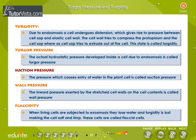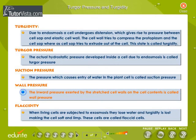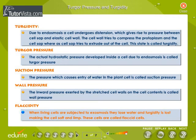Suction Pressure: The pressure which causes entry of water into the plant cell is called Suction Pressure. Wall Pressure: The inward pressure exerted by the stretched cell walls on the cell contents is called Wall Pressure. Flaccidity: When living cells are subjected to exosmosis, they lose water and turgidity is lost, making the cell soft and limp. These cells are called flaccid cells.